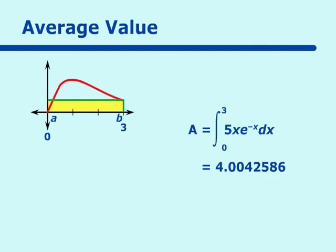The area of that rectangle is 4.0042586. We also know the width of the rectangle, which is 3. So if we want the average value, it will be, as you can figure out from what I'm saying here, it will be the height of the rectangle. And that will be the area over the width.